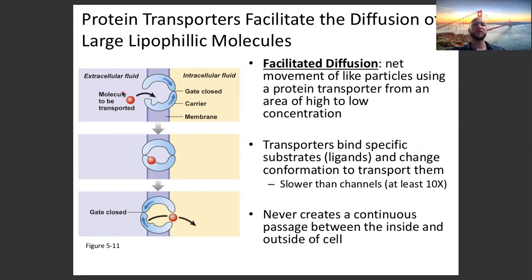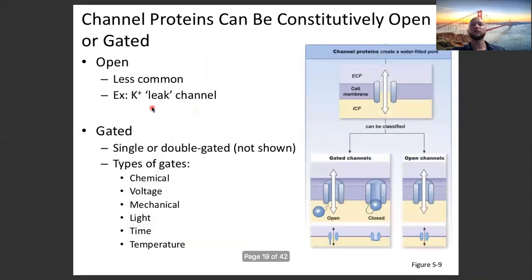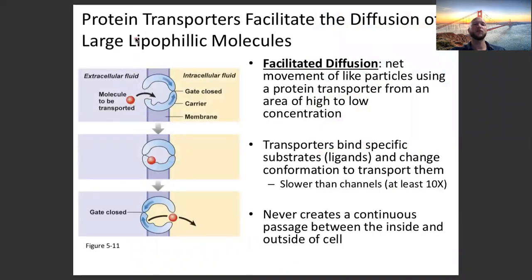Protein transporters facilitate the diffusion of large lipophilic molecules — large molecules that cannot readily move across the cell membrane need a little extra help. In some situations, channels are a great method to do that, but for other types of molecules, channels just don't work well. Protein transporters can come in and help these molecules get across the cell membrane.